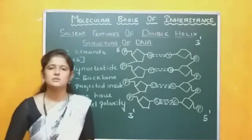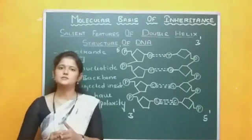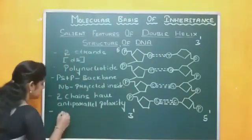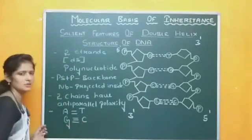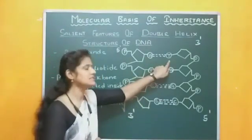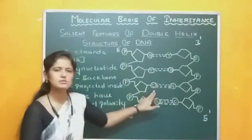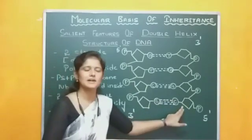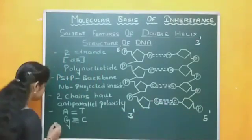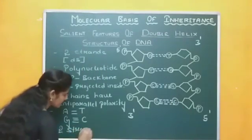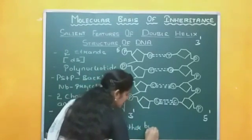The next point: purines always pair with pyrimidines. Adenine pairs with thymine with two hydrogen bonds, and guanine pairs with cytosine with three hydrogen bonds. Here we can see adenine pairs with thymine with two hydrogen bonds, thymine pairs with adenine with two hydrogen bonds, cytosine pairs with guanine, and guanine pairs with cytosine with three hydrogen bonds. The two strands are held together by hydrogen bonds.